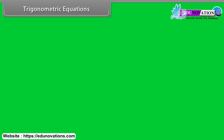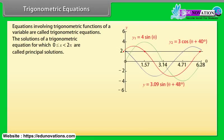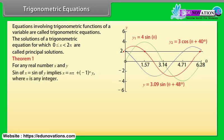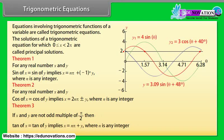Trigonometric equations: Equations involving trigonometric functions of a variable are called trigonometric equations. Solutions for which 0 ≤ x < 2π are called principal solutions. Theorem 1: sin x = sin y implies x = nπ ± (−1)ⁿ y, where n is any integer. Theorem 2: cos x = cos y implies x = 2nπ ± y, where n is any integer. Theorem 3: If x and y are not odd multiples of π/2, then tan x = tan y implies x = nπ + y, where n is any integer.